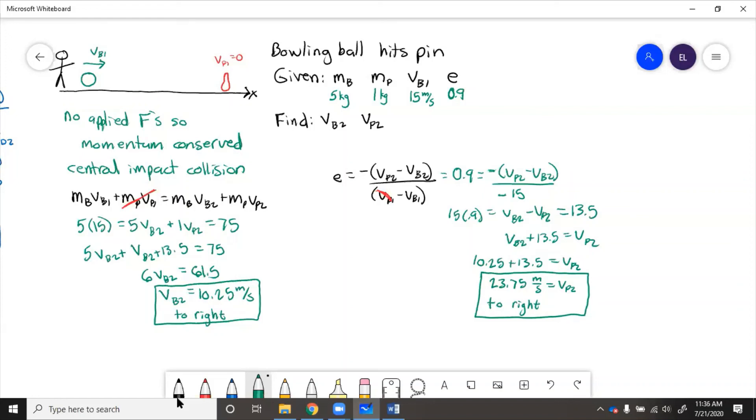So to recap this problem, we recognize that with no applied forces, momentum is conserved, and this is a central impact collision because it's only one-dimensional. So we wrote the conservation of momentum equation and the E equation, and then we plugged the numbers in, substituted, and solved for the final velocities.